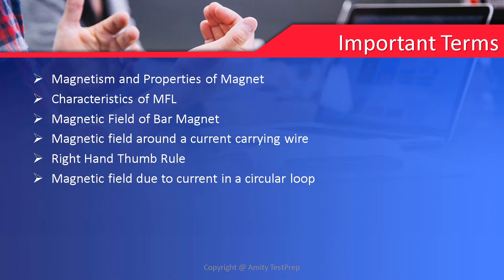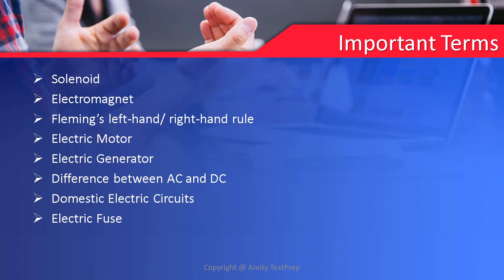The very first important term is the introduction of magnet — we will try to understand magnetism and properties of magnet. Then characteristics of MFL, that is magnetic field lines, magnetic field of a bar magnet, then magnetic field around a current carrying wire or conductor, right hand thumb rule, magnetic field due to a current in a circular loop, solenoid, electromagnet, Fleming's left hand as well as right hand rule, electric motor and electric generator, difference between AC and DC, domestic electric circuits, and lastly electric fuse. These are the important terms or content of the chapter.